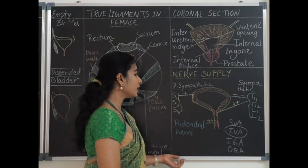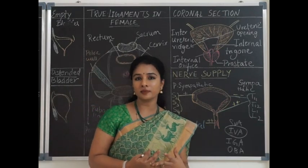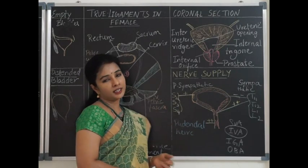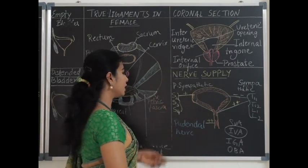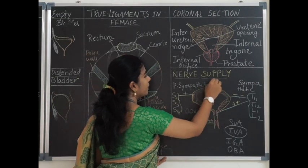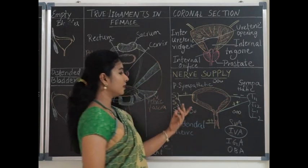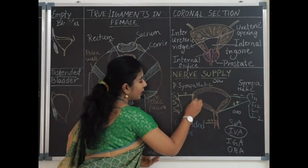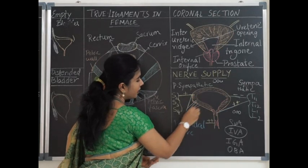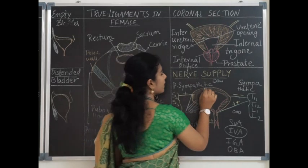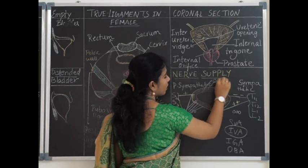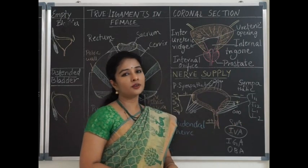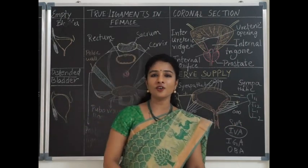Venous drainage of the urinary bladder is via the vesical venous plexus, which drains into the internal iliac vein. Lymphatic drainage is divided into three groups: the anterior group (draining the inferolateral surface and apex), the intermediate group (draining the superior surface), and the posterior group (draining the base and neck of the urinary bladder).